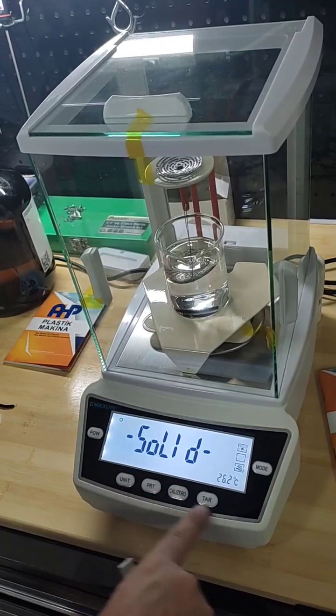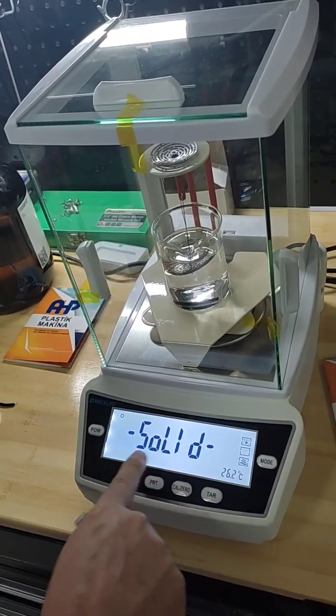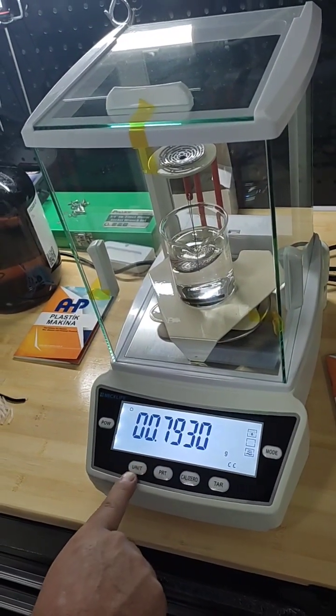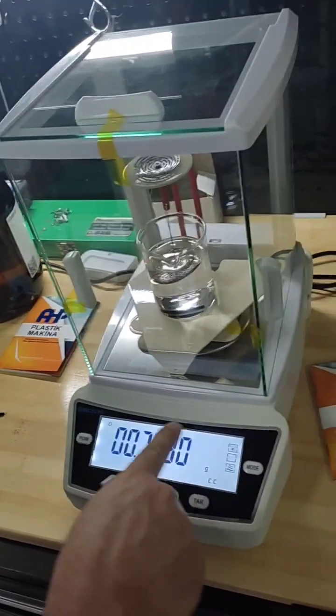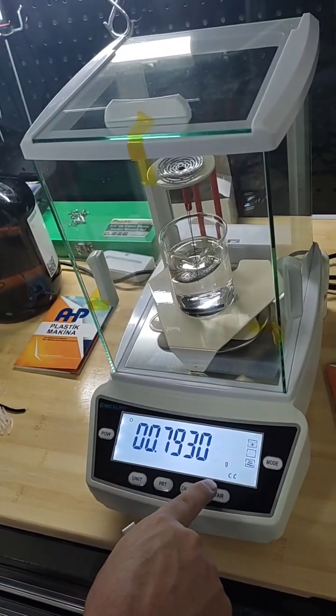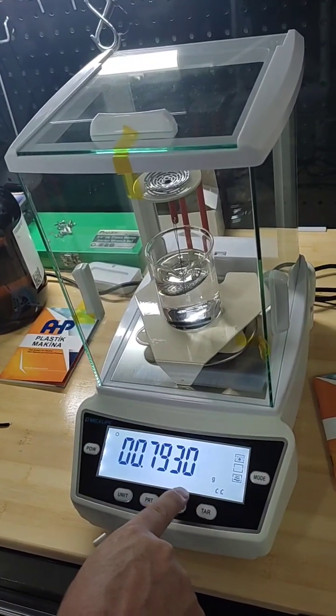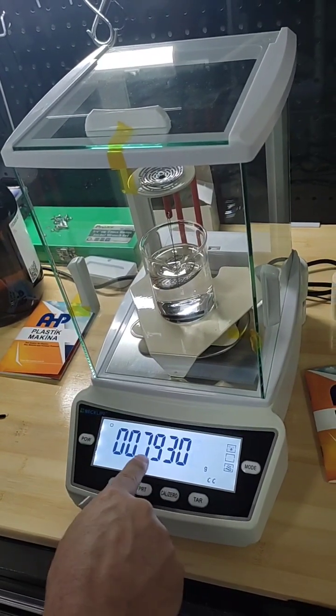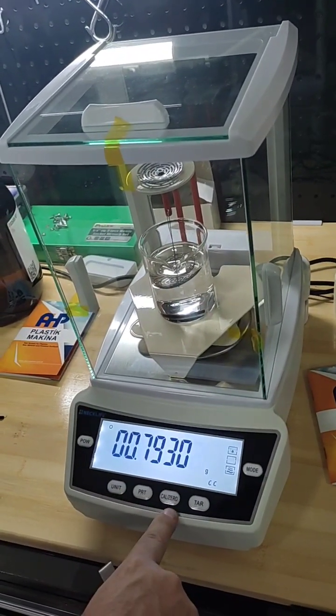When it shows solid, you can click on unit. This is the value for the liquid density. It is methanol. I'm just entering this value for the density of methanol here.